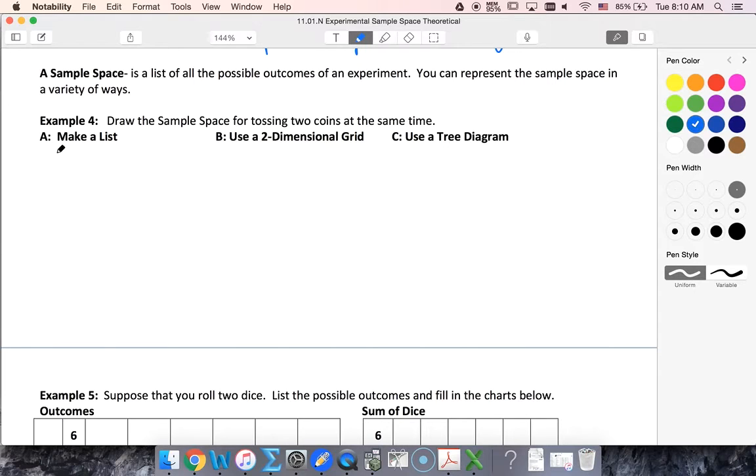When I make a list I'm going to do this similarly to our true-false table. Remember how we had true true false false and then true false true false? I'm going to do that with my heads and tails. So I'll do heads heads tails tails and then heads tails heads tails. Notice this gives me my four outcomes: heads heads, heads tails, tails heads, tails tails.